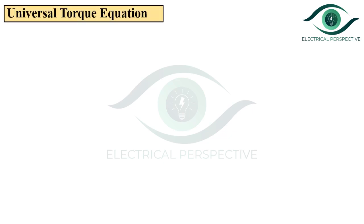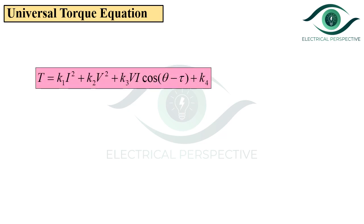Now let us revise the universal torque equation before deriving the trip law for the reactance relay. This equation explains the working of an electrical relay. The relay has arrangements of electromagnets consisting of current and voltage windings that produce operating torque and restraining torque. The operating characteristics of all types of relays can be obtained using this universal equation by assigning the proper signs to each term.